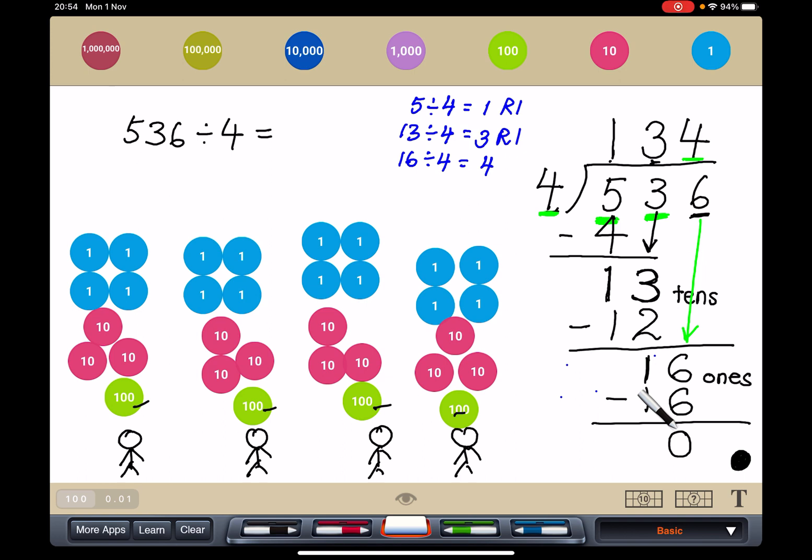So you can see from here that each person gets 134. 134, 134, 134, 134. So if I have 536 sweets, I split between my 4 friends, each of them gets 134.